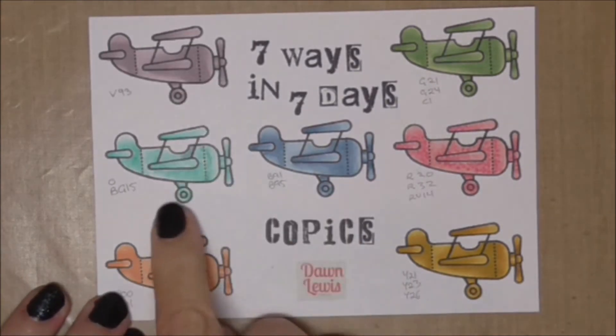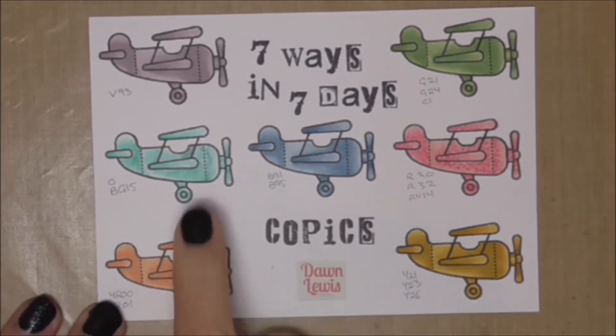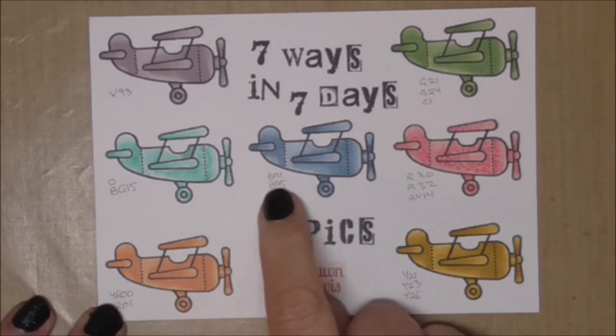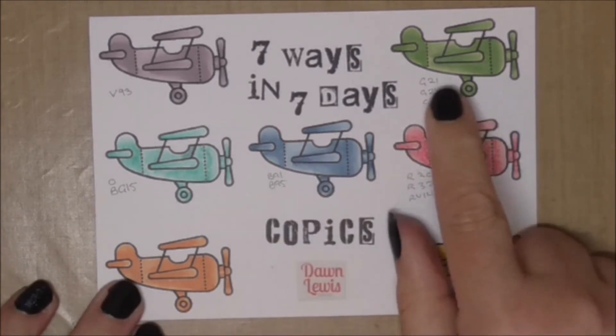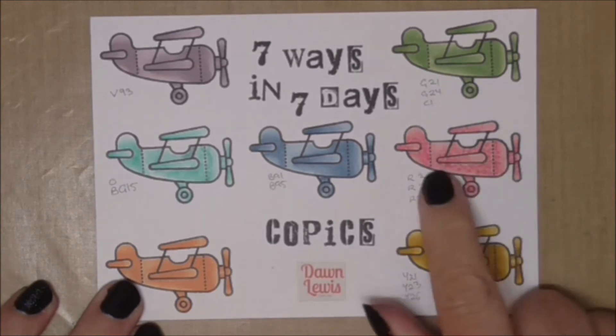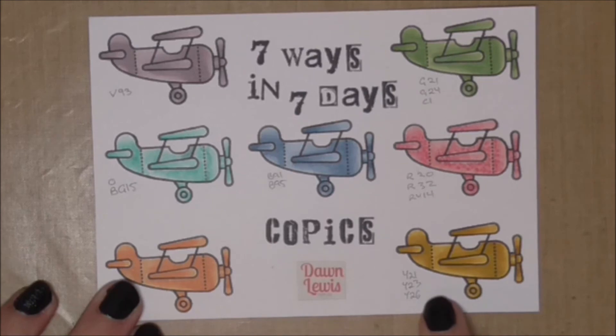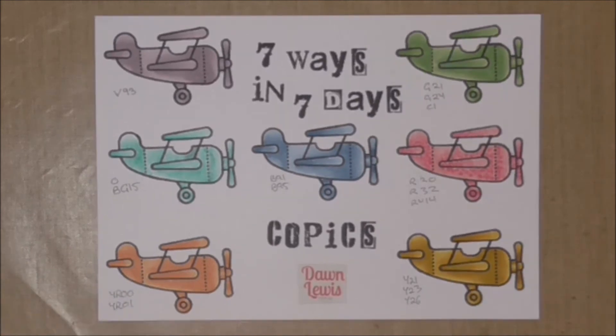So on day one we used one marker, on day two we used one plus a zero, on day three we used two close together, on day four we used two far apart, on day five we used two plus a grey, on day six we used three mismatched, and today we've used three perfectly matched Copic markers to get a beautiful color blend.